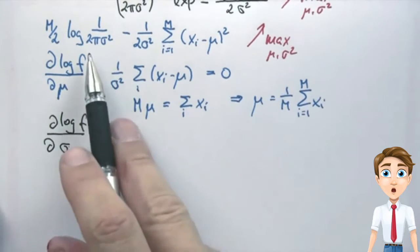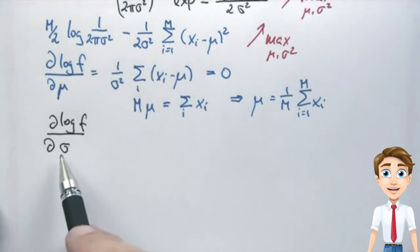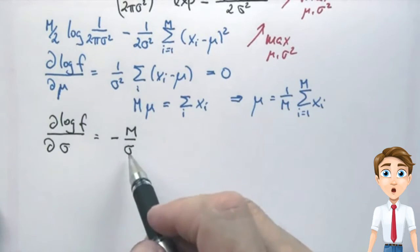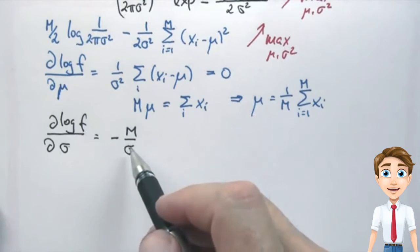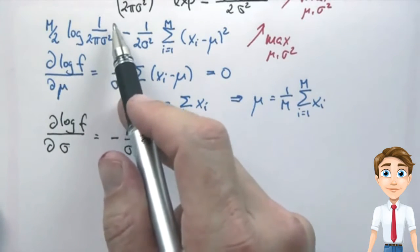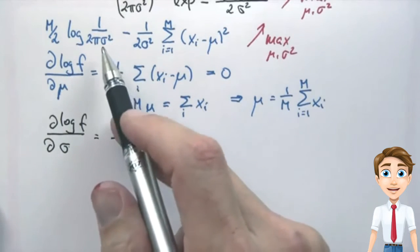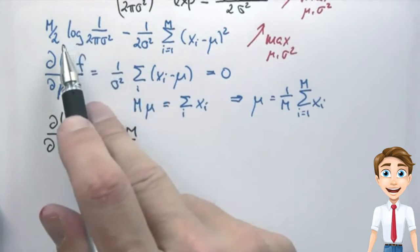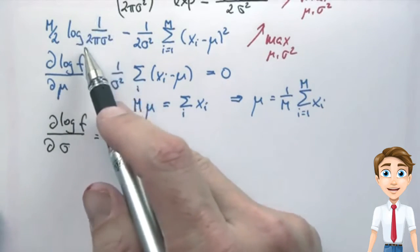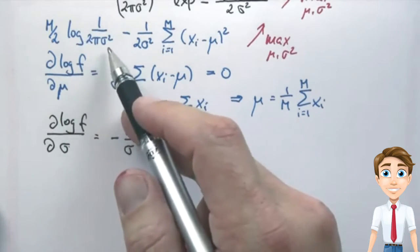If you compute the derivative of this expression over here with respect to the variance, we get minus m over 2 sigma squared, which happens to be the derivative of this expression over here.